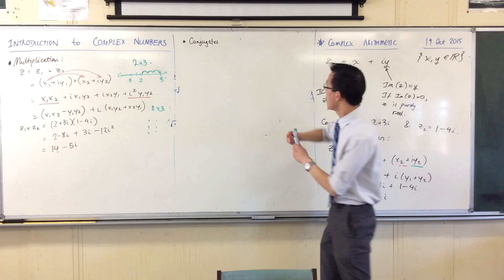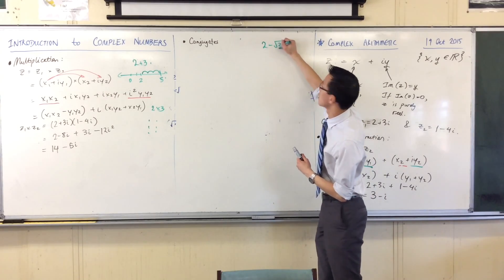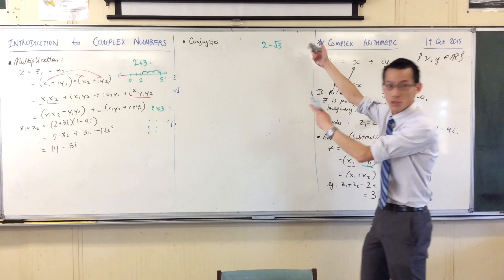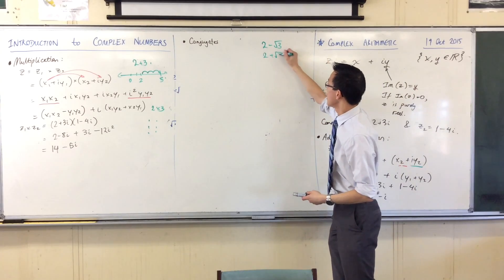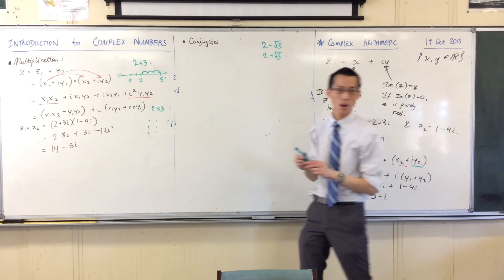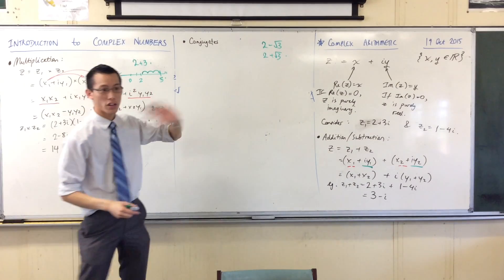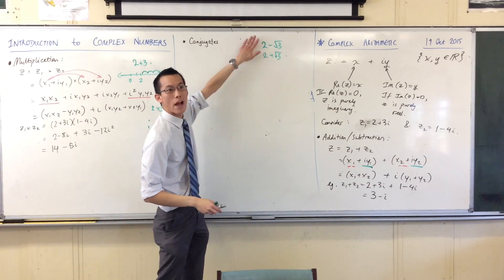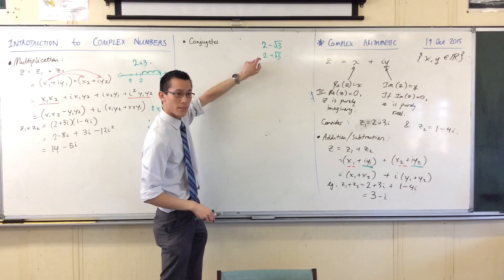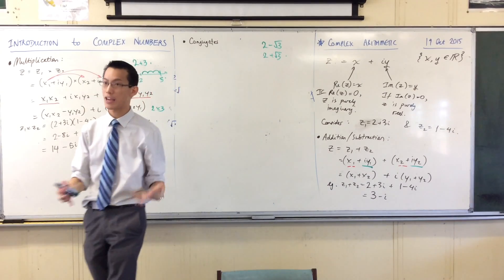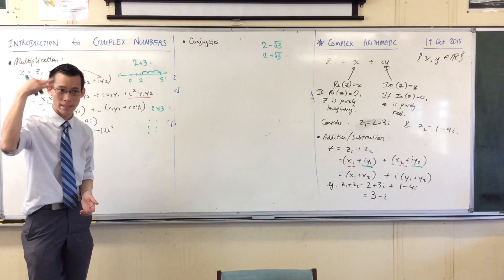It's to do with surds. So for instance, you don't need to write this down, but I've got a number like this, 2 minus root 3, and its conjugate is 2 plus root 3. Now the reason why this is useful, we use this for rationalizing denominators, right? When you've got a denominator and it's got some weird irrational numbers in it, you can take advantage of the conjugate to make the whole thing rational. I just want you to think about that, keep that in the back of your mind.